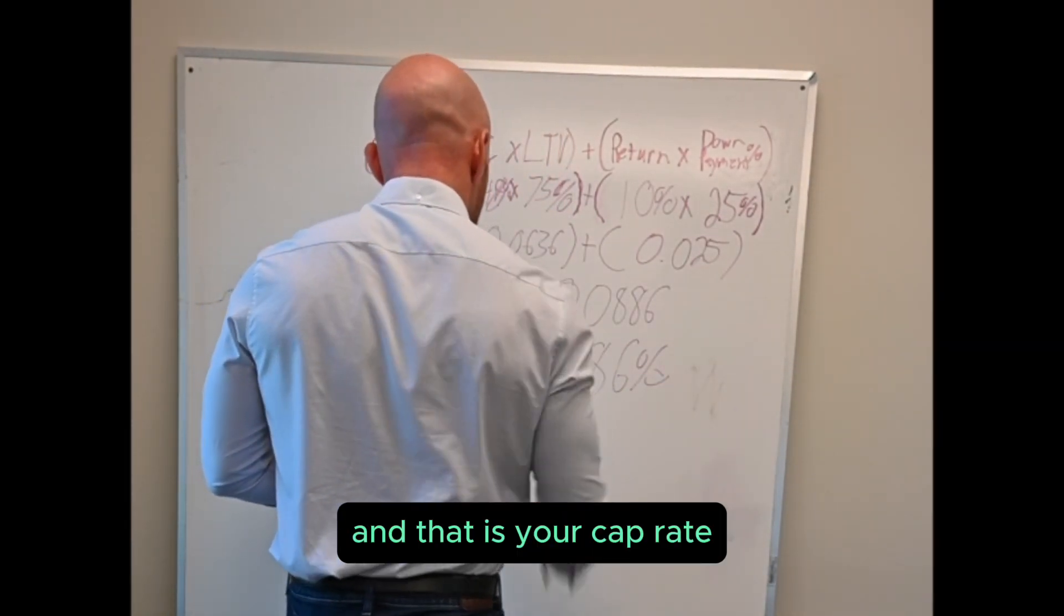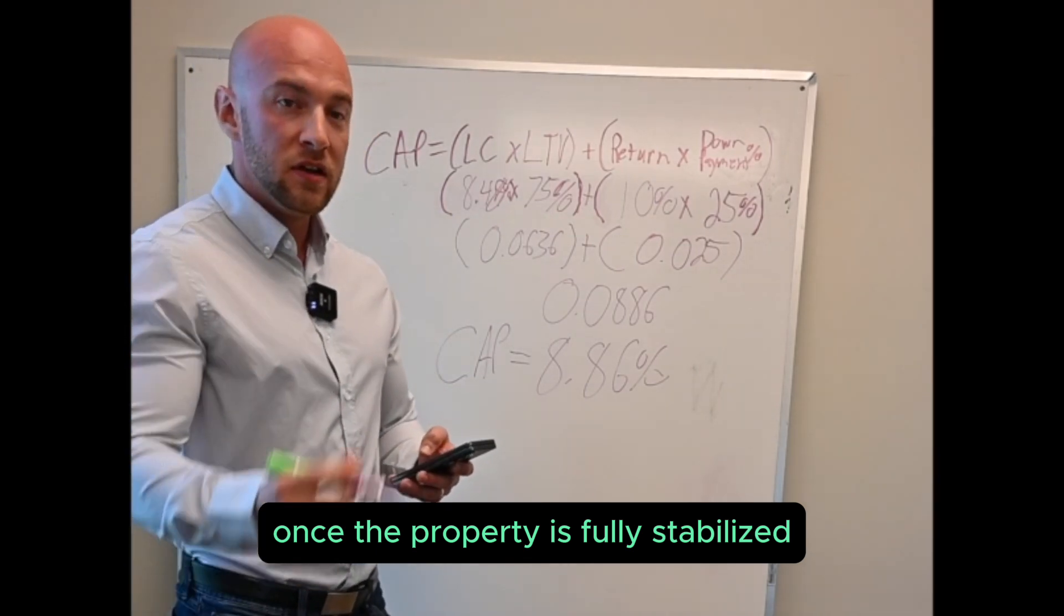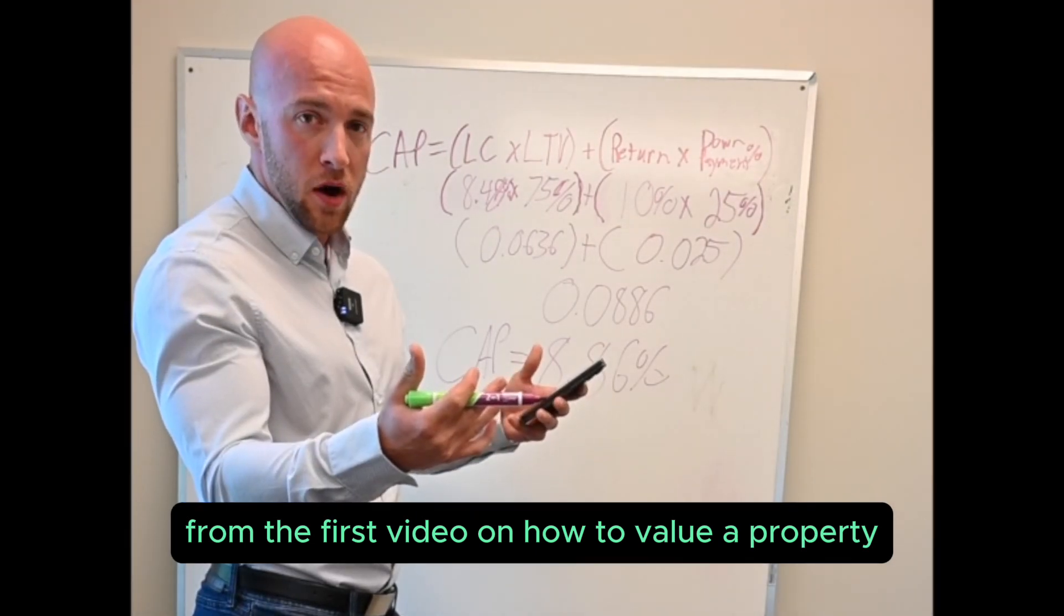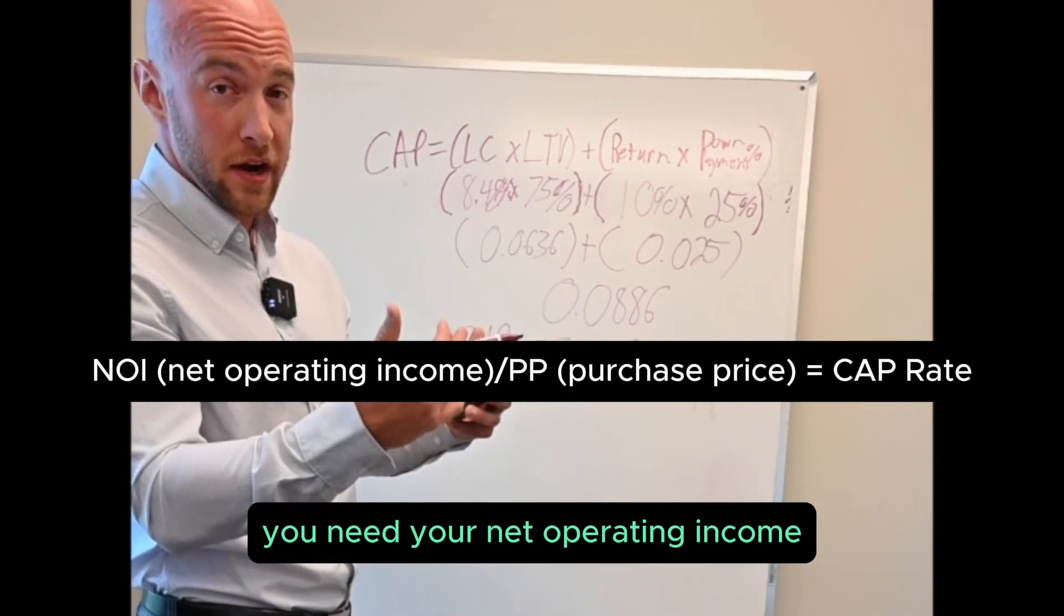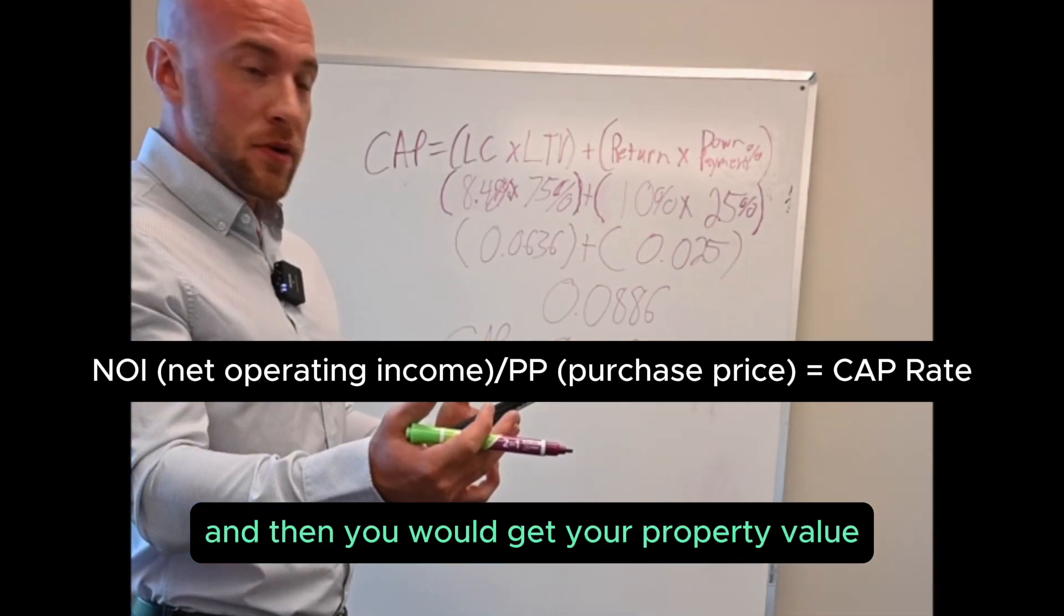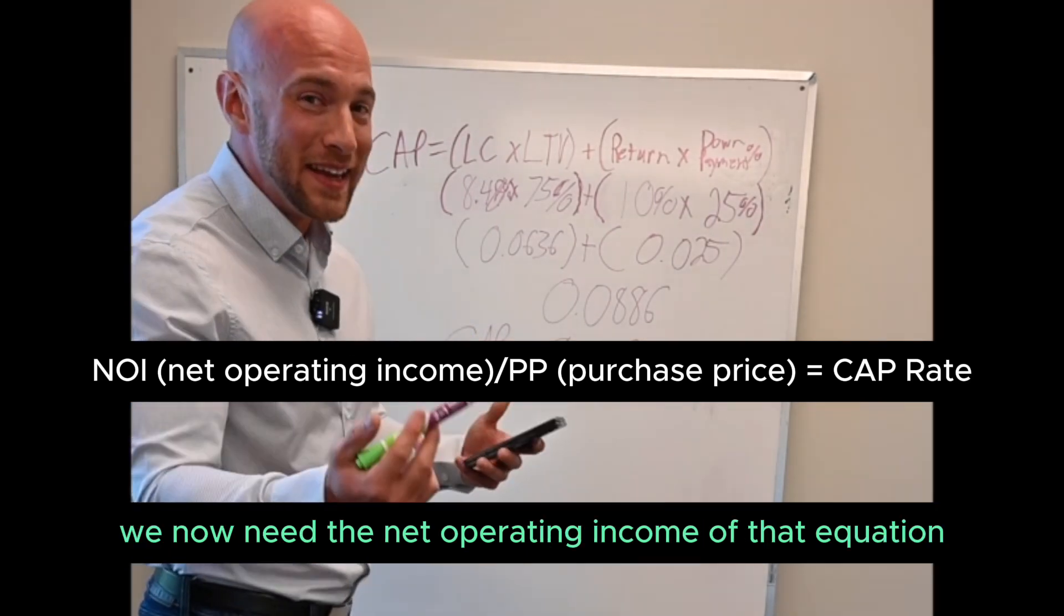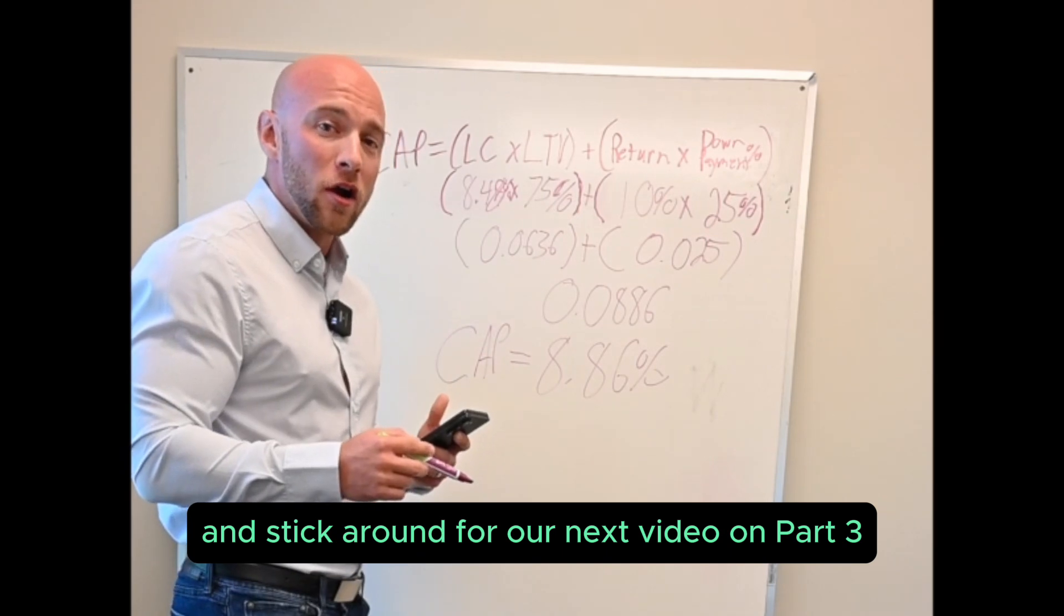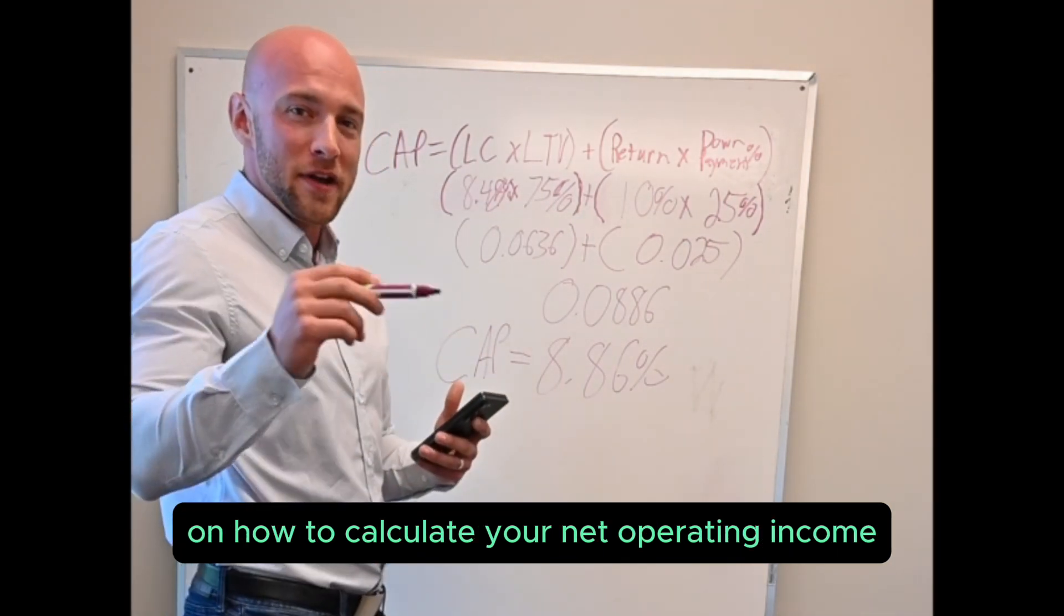So we now know the equation from the first video on how to value a property. You know you need your cap rate, you need your net operating income, and then you would get your property value. We now have the cap rate of that equation, we now need the net operating income of that equation. Stick around for our next video on part three on how to calculate your net operating income.